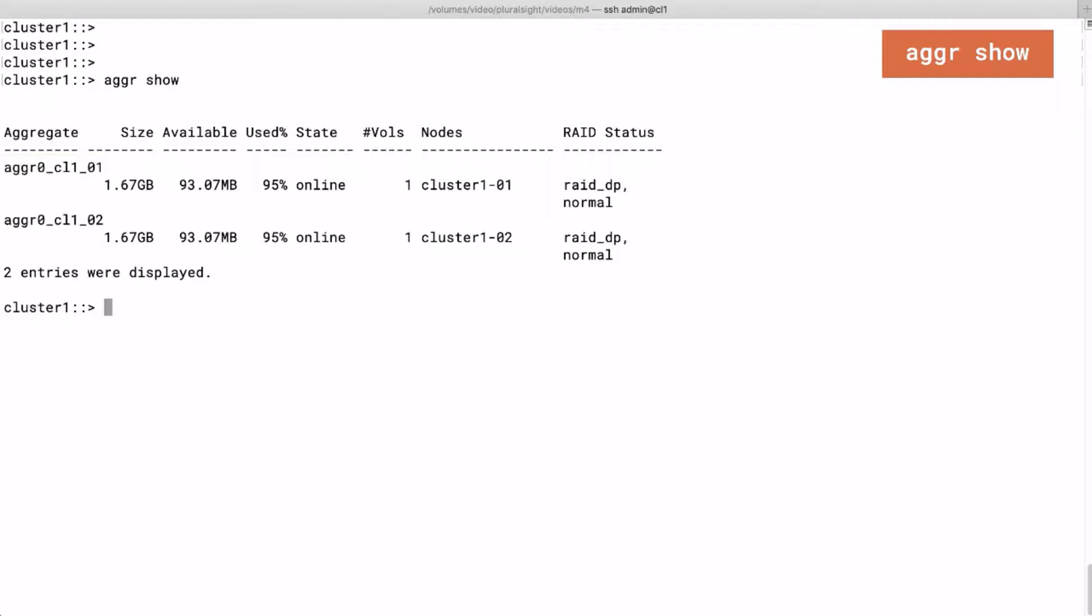The agr show command will list the owner of the aggregates and the size of the aggregates along with the available and used space.